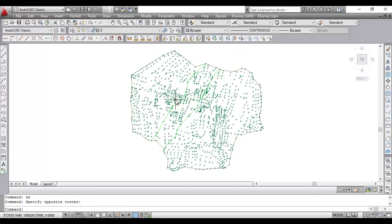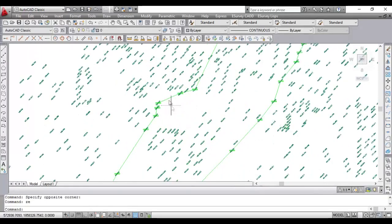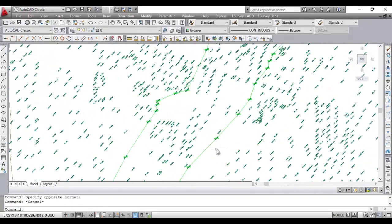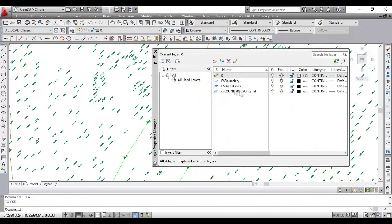In eSurvey CAD, to generate contours with break lines, you just need to create proper break lines as 3D polyline and just keep it in break line layer.